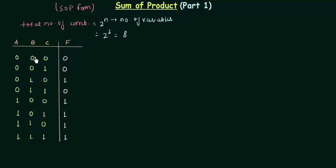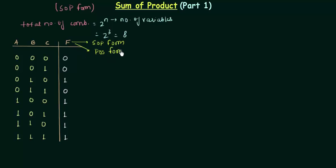For the first combination when A is low, B is low, and C is low, the function is also low. Similarly it is low, high, low, and for the last 4 cases it is high. In Boolean algebra you can express this function F in two ways: the first way is to express it in SOP form, that is the Sum of Product form, and the second way is to express it in POS form. Let's start with the SOP form in this presentation. The SOP form is written when the function is high.